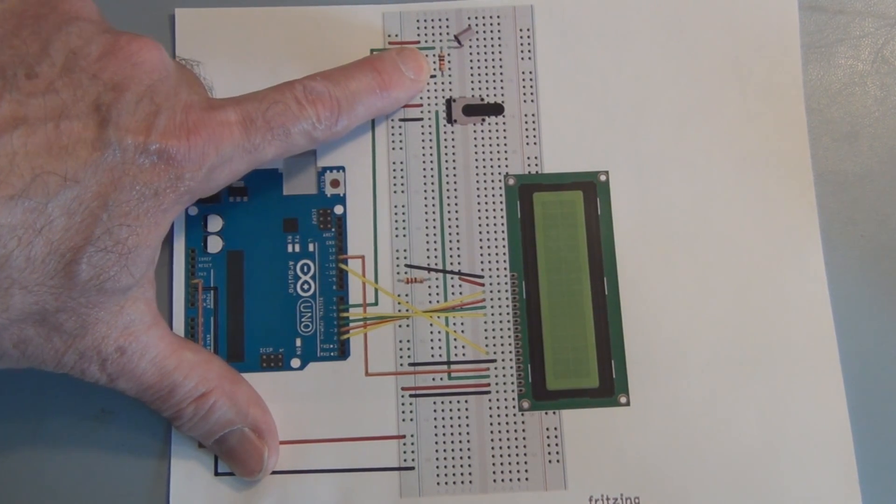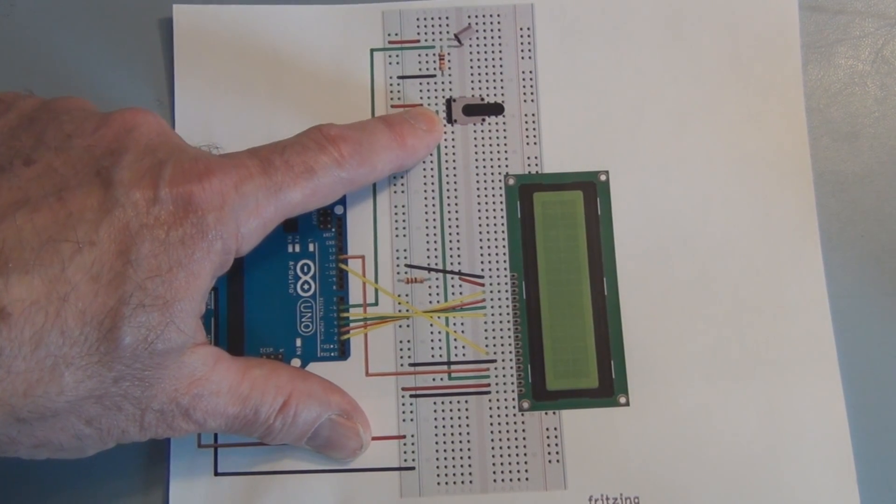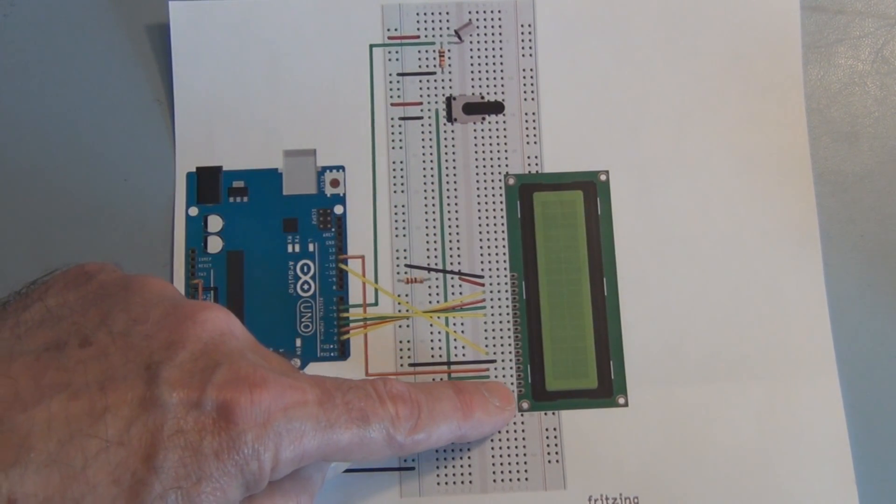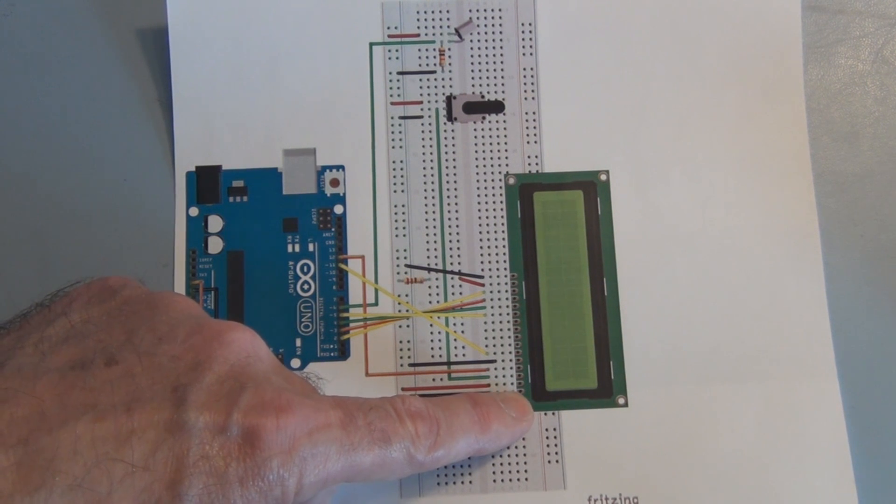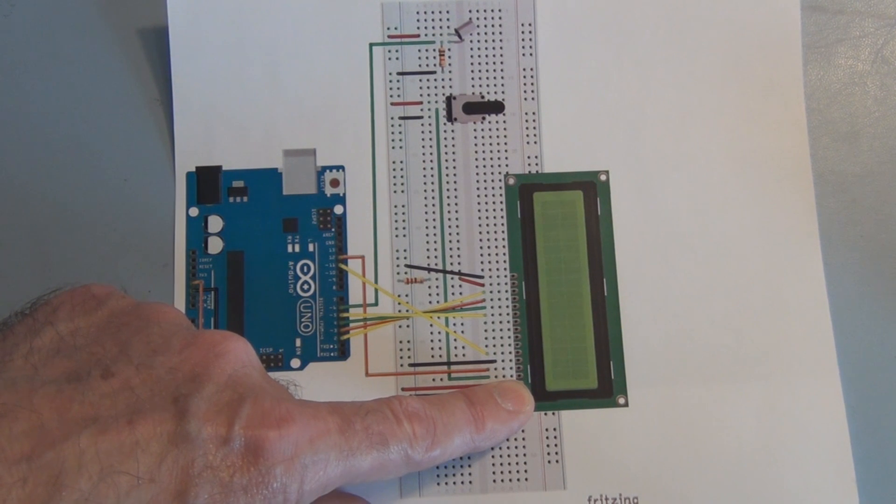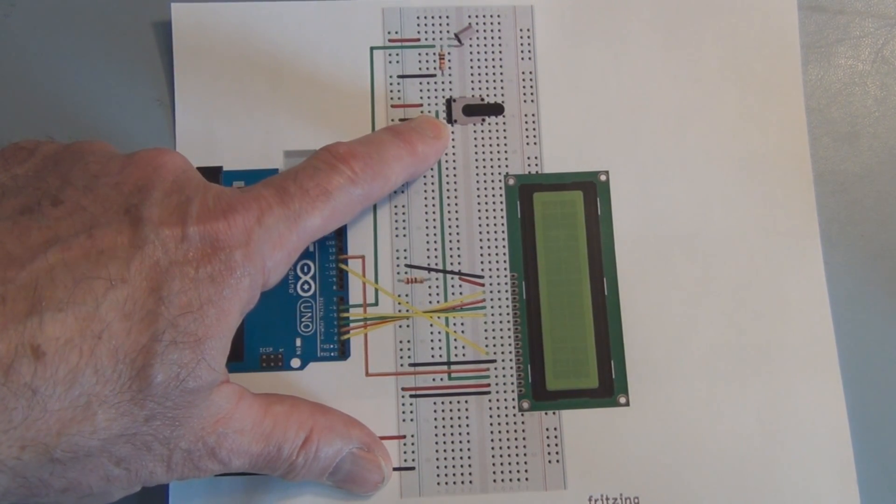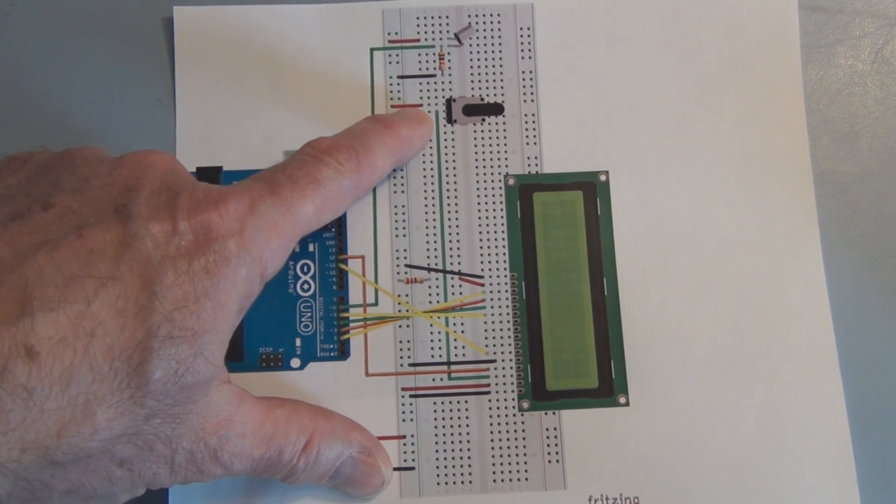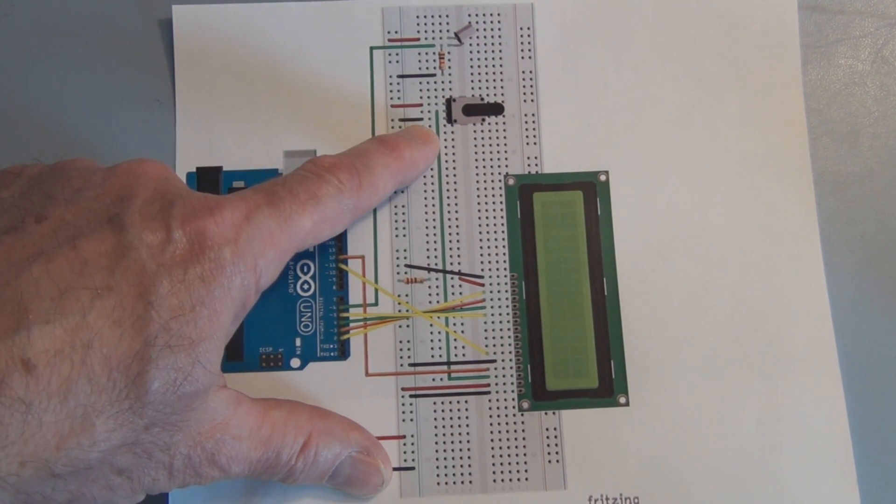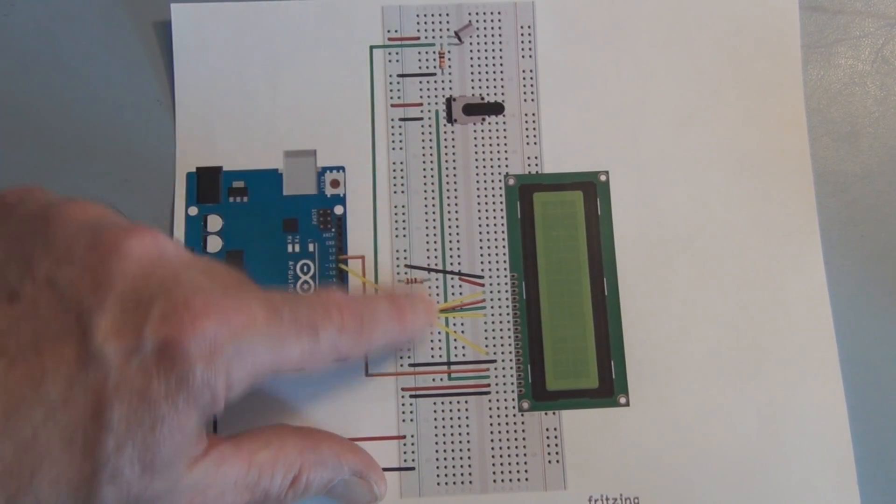And we have a 10K resistor going to ground. Now the potentiometer, this is going to control the voltage on the backlight. So we've got pins 1, 2, 3. And that's V0, that adjusts the supply voltage for the LCD. So you can control how bright the characters are. And the other side goes to plus 5 volts, and the other outside pin goes to ground, with the center pin going to pin 3.